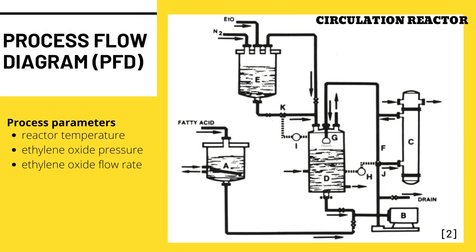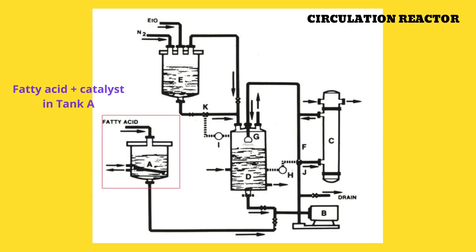In this video, ethylene oxide production from a circulation reactor is explained, as circulating reactors provide better mixing and better control, thus resulting in greater throughput and more uniform products. The process parameters in the production of ethylene oxide are reactor temperature, ethylene oxide pressure, and ethylene oxide flow rate. Fatty acid and catalyst are charged to the feed tank A, and the mixture is heated and dried.